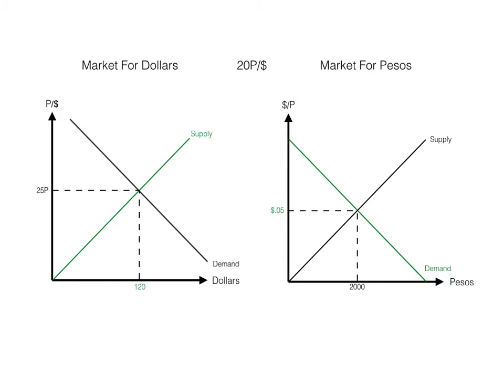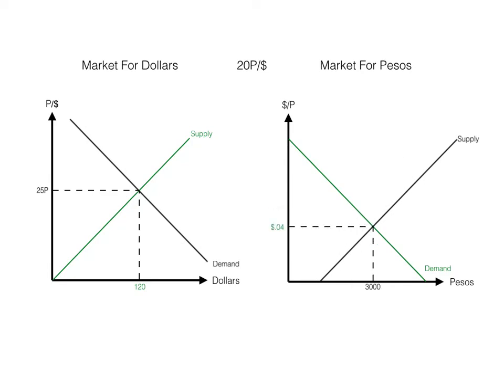At the same time, the supply of pesos increases. On the inverse side, you now get 4 cents per peso instead of 5 cents per peso, and there are now 3,000 pesos being transacted in this market. Before it was 20 pesos per dollar at $100, so that was 2,000 pesos. Now it's 25 pesos per dollar with $120 — therefore, it's 3,000 pesos.